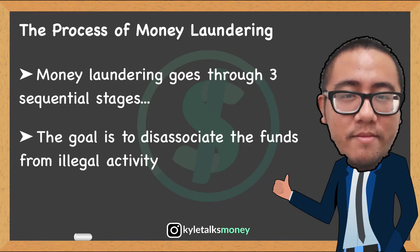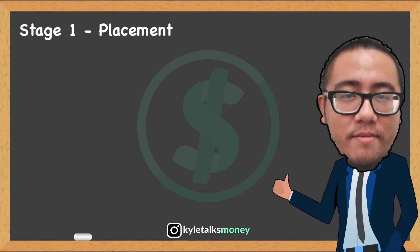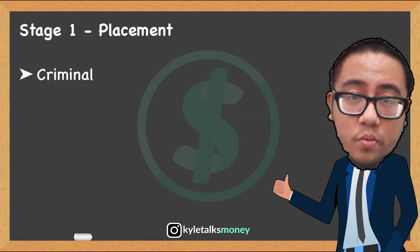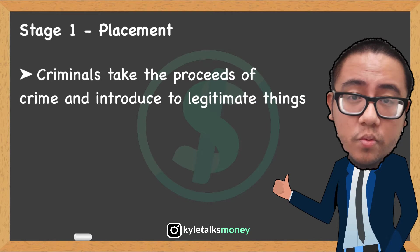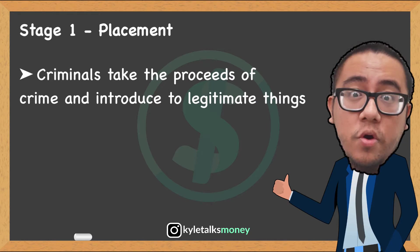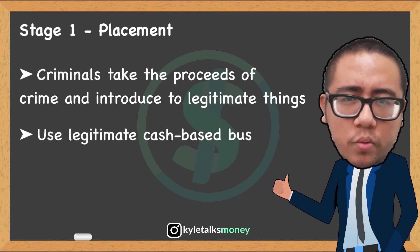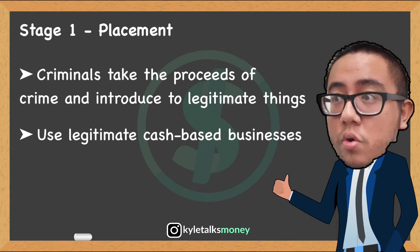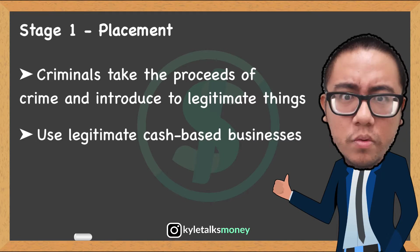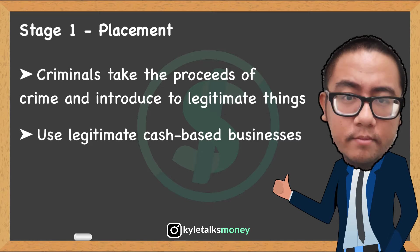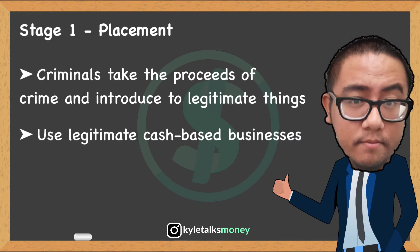First, let's talk about placement. Placement is where criminals take the proceeds of crime and introduce them into the legitimate financial system. One method of placement is using a legitimate cash-based business such as a laundromat. Criminals blend dirty money with the laundromat's real business sales and may also include fake invoices and receipts to give the illusion of more sales.